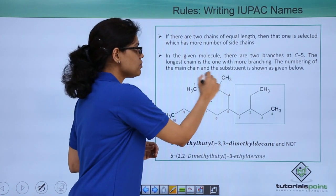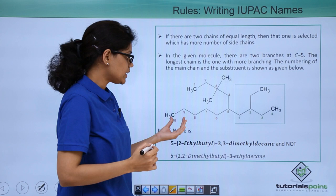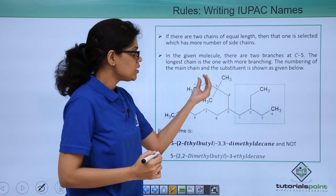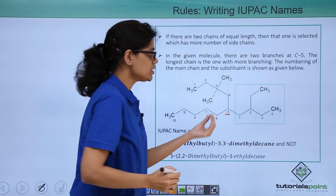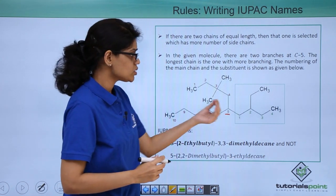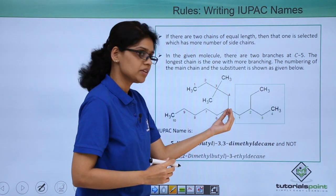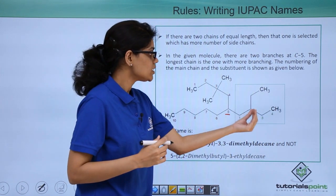You can see that if you name it from this side also you get 10 and if you name it from this side also you have 10 carbon atoms. And in both the cases, there is a major branching that is happening at 5th position. So you can see that by naming from here you have 1, 2, 3, 4, 5. You have branching at 3rd and 5th position.